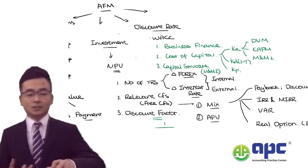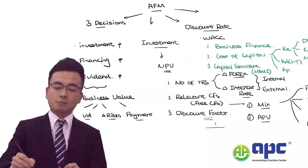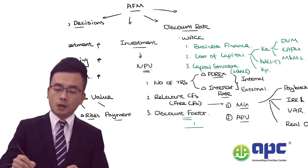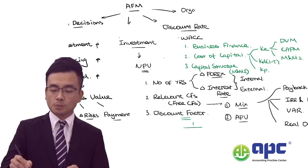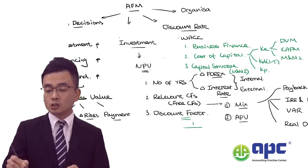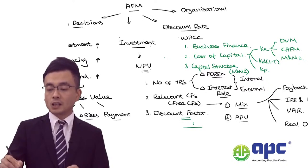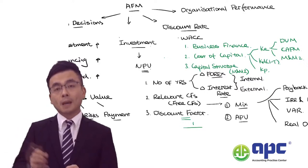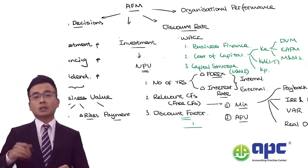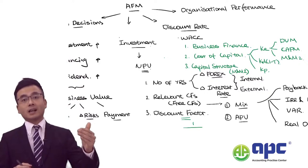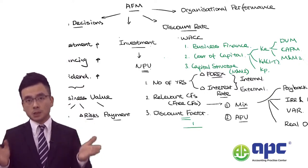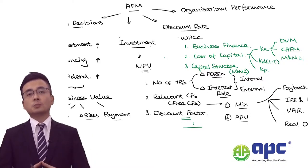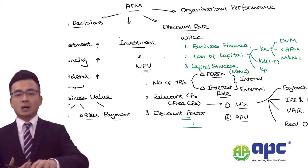The final bit in the AFM syllabus is that we are talking about organisational performance. We need to interpret numbers by calculating some ratios, or perhaps to predict what may be going on — for example, given a proposal goes ahead, what might the P/E ratio look like or the potential earnings per share.